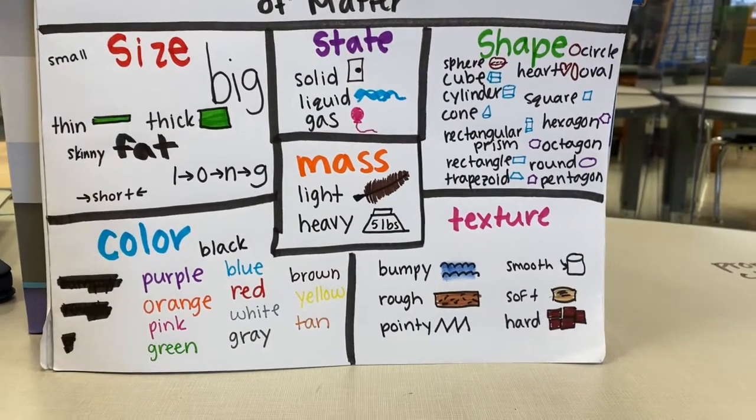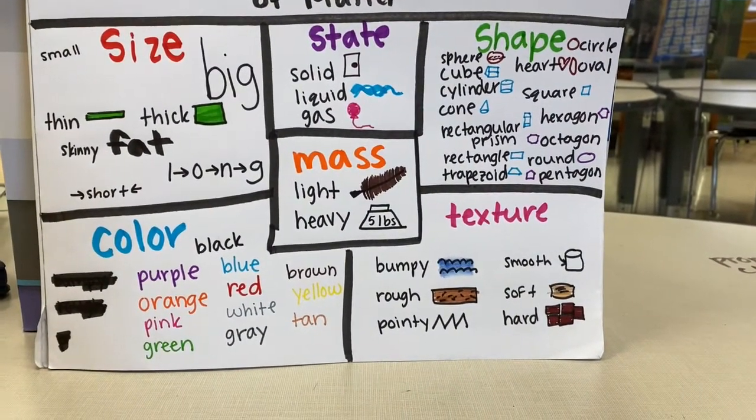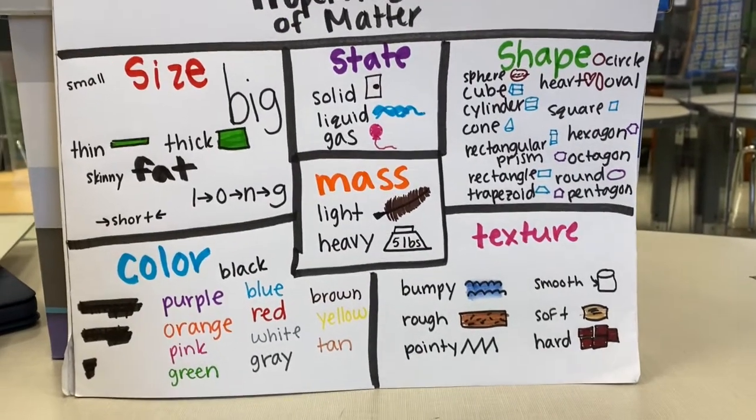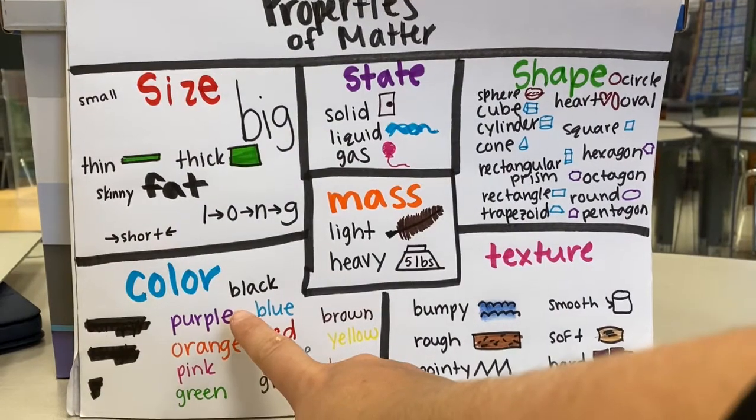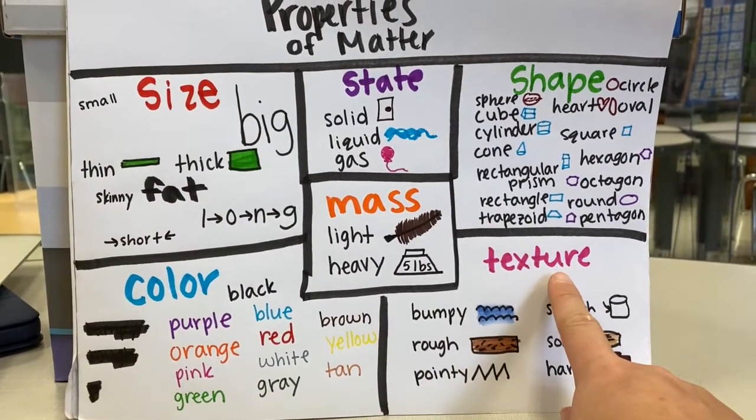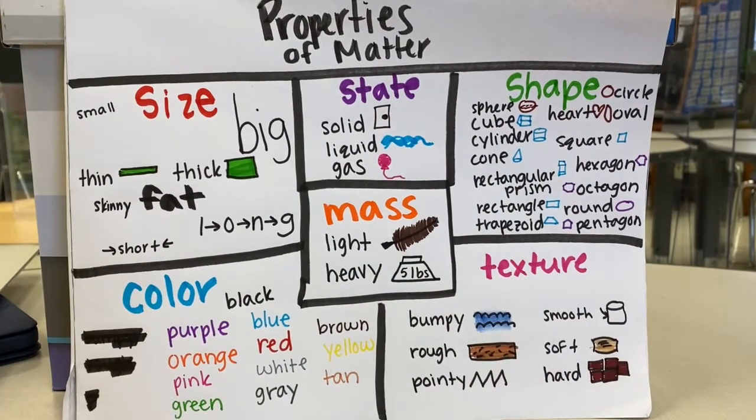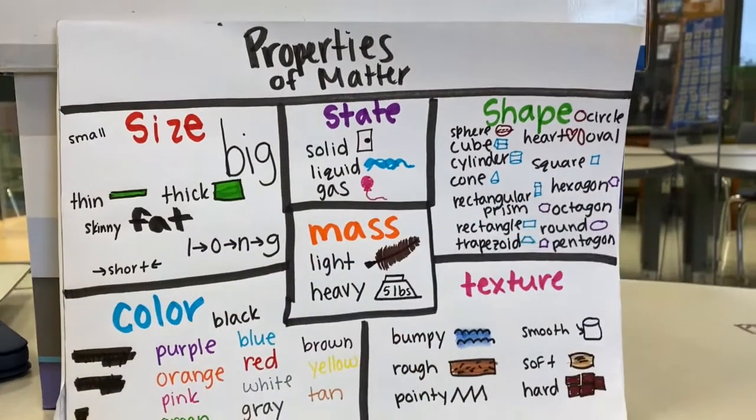So when we change matter by cutting, folding, sanding, melting, and freezing, we change their properties. We change their size. We change their color sometimes and their texture. We change the shape of objects, their mass, and even their state.